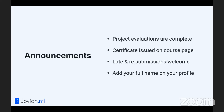One thing you might want to do is add your full name on your profile. Just go to jovian.ml/settings and enter your full name there. Once you enter your full name, we will regenerate your certificate for you.